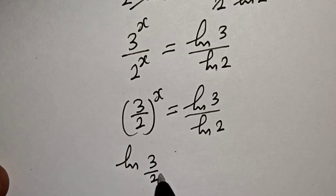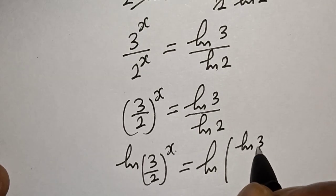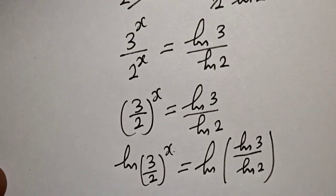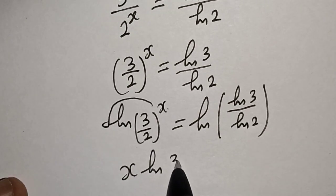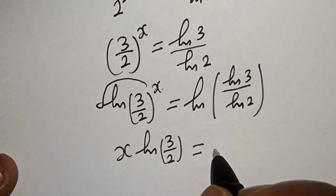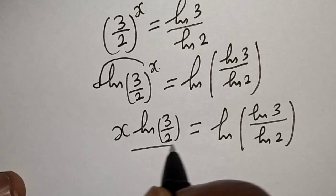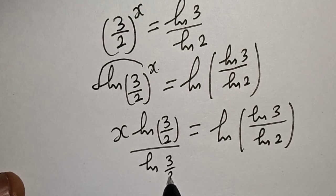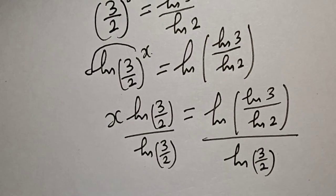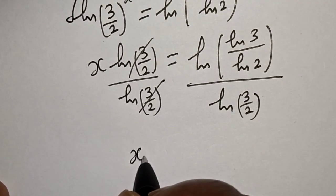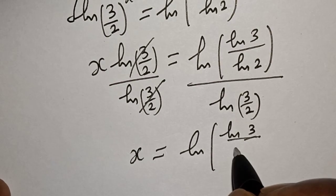Taking the natural log of both sides, we apply the exponent rule to get s times natural log of 3 over 2 equals natural log of natural log 3 over natural log 2. Then dividing both sides by natural log of 3 over 2 gives us the value of s.